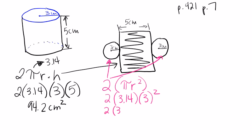We get 2 times 3.14 times 9. Plug that into the calculator and we get 56.52 centimeters squared. That is the area of our two circles.